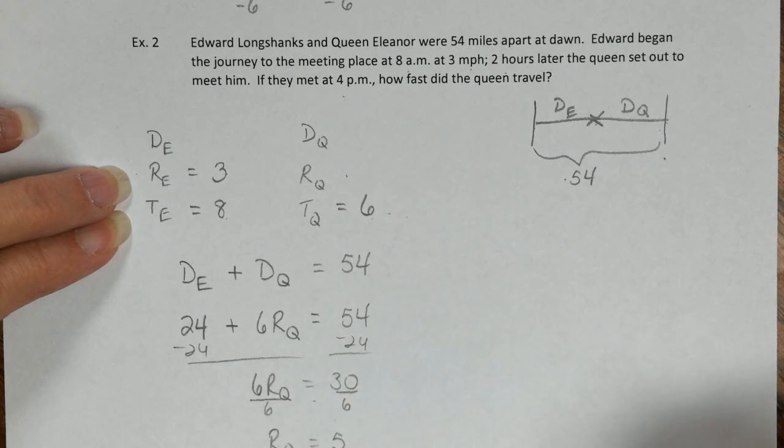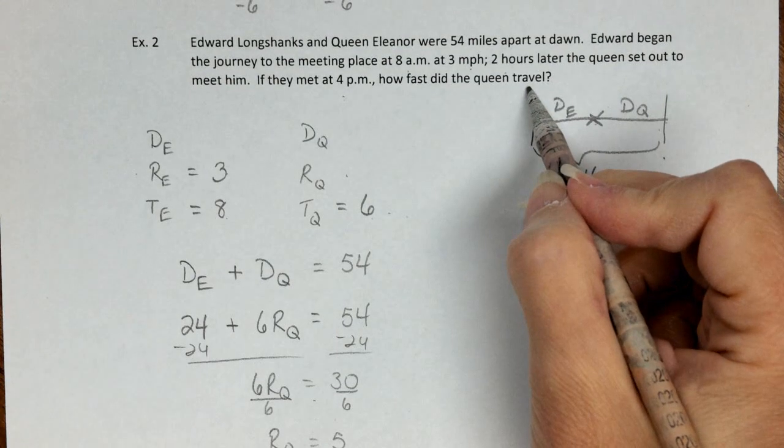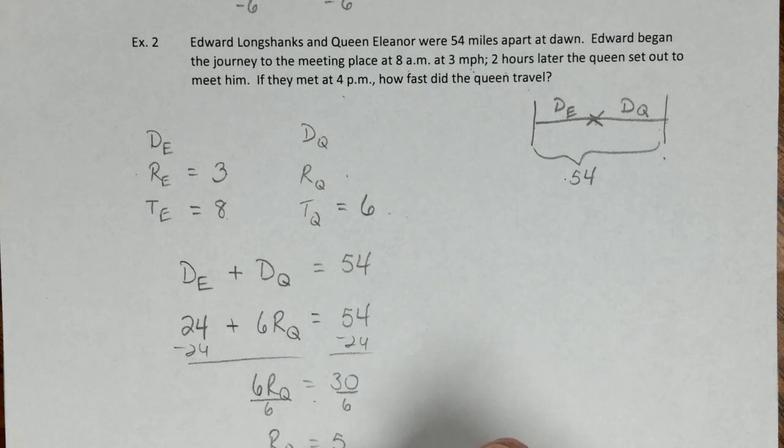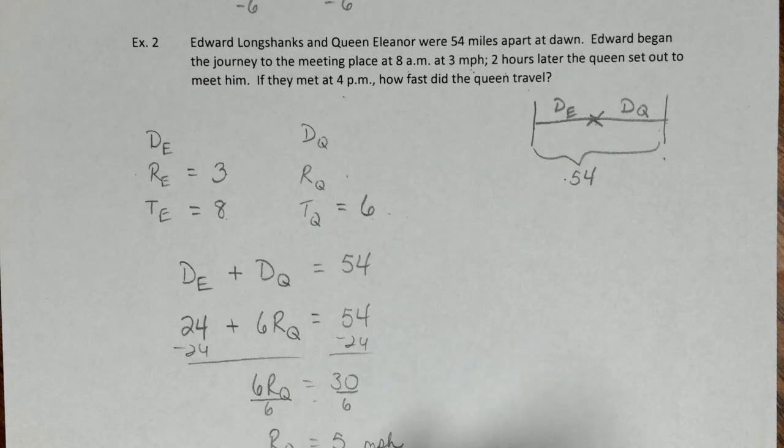The rate of the Queen is 5. Look back at the question, how fast does she travel? We have found what they want. We just need units, miles per hour. There we are. It is finished.